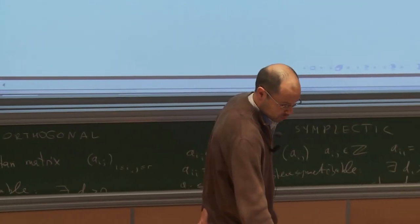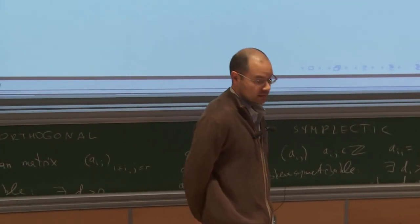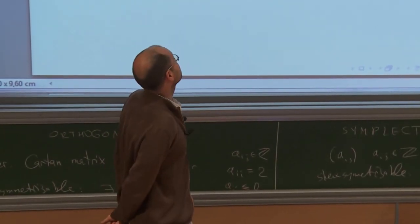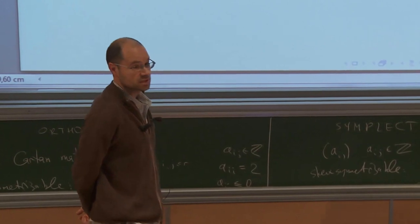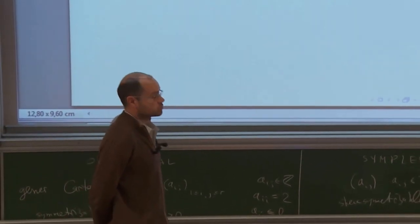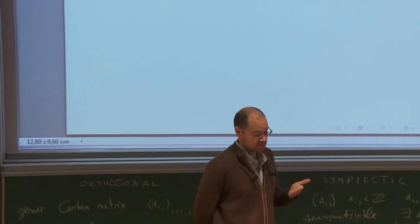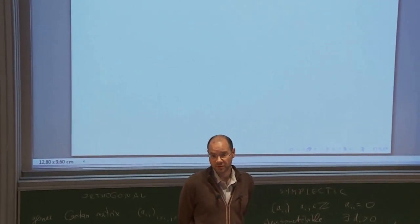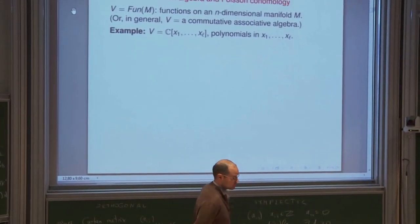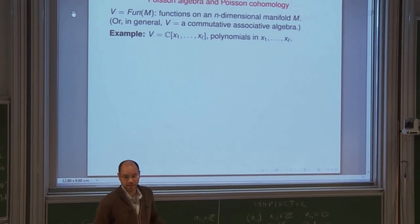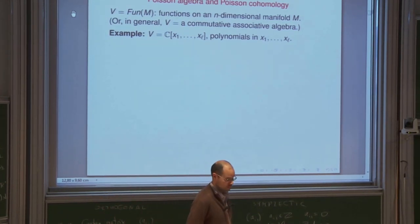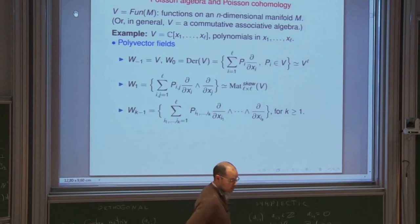We discuss Poisson algebras, Poisson cohomology, and start by fixing a certain commutative associative algebra, denoted V. Usually one thinks of this as an algebra of functions on a manifold, but in general we can think of it as just a commutative associative algebra. To keep an example in mind, fix the algebra of polynomials in infinitely many variables x_1, x_l, and so on.